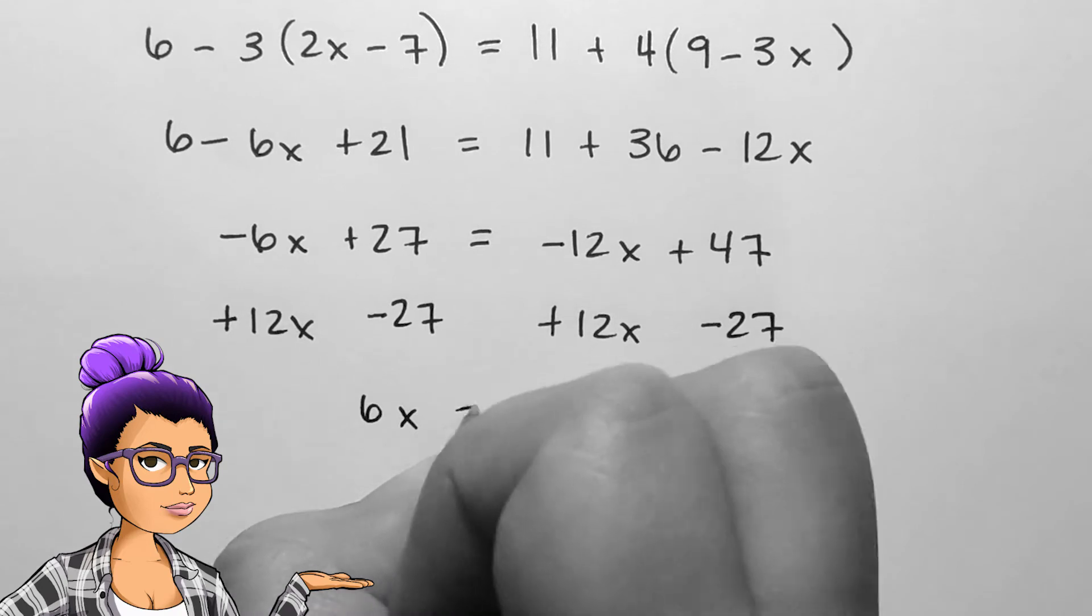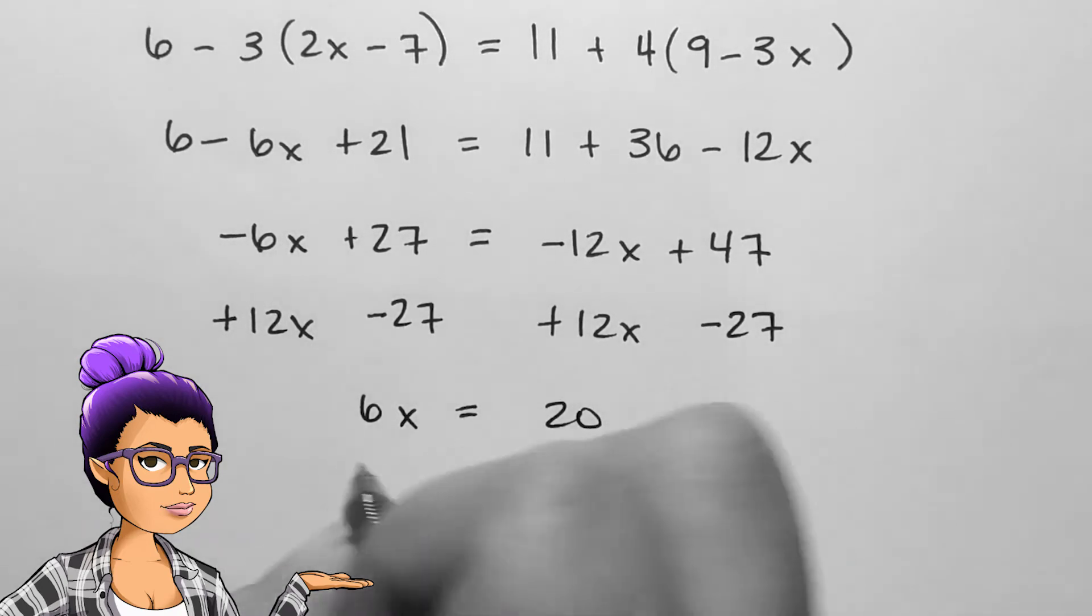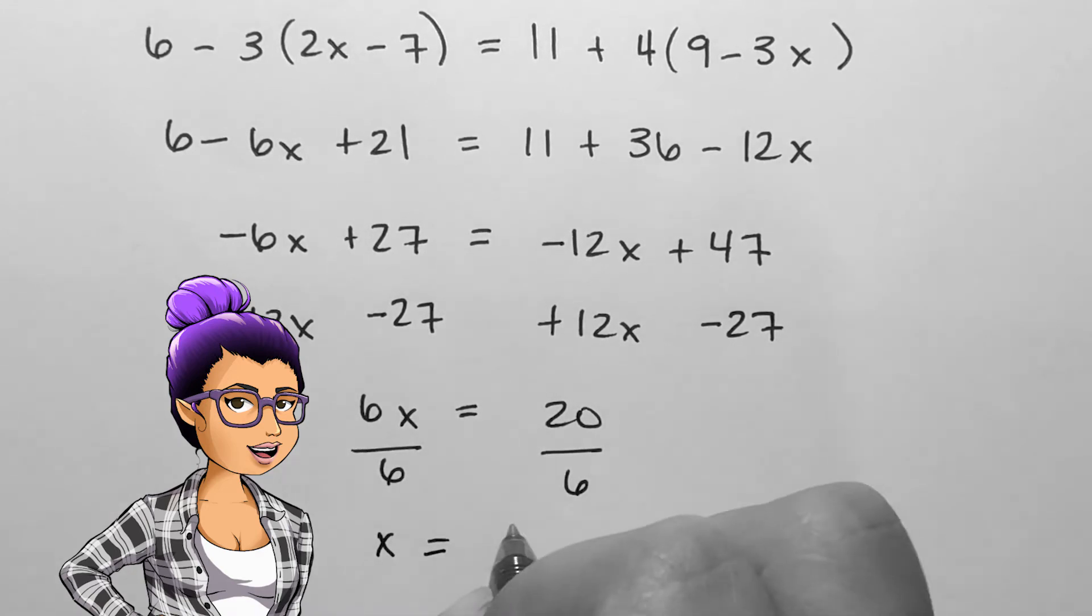I will get 6x equals 20. This isn't quite what we were aiming for though, so we also need to divide by 6 on both sides to get rid of the coefficient that is left over on x.